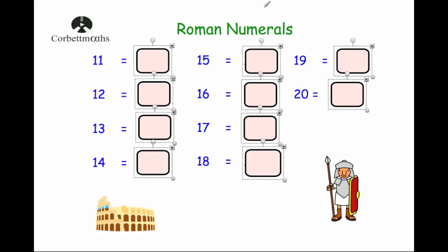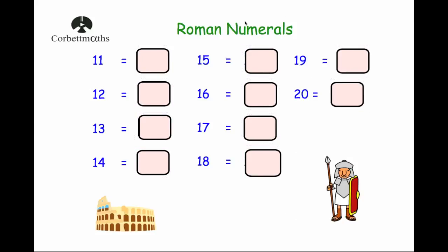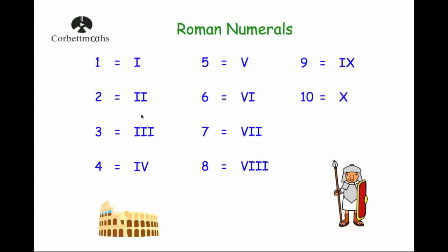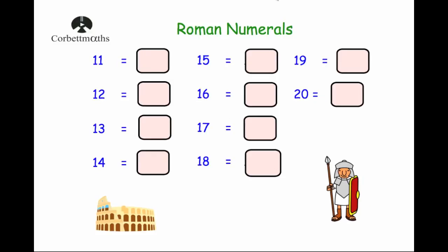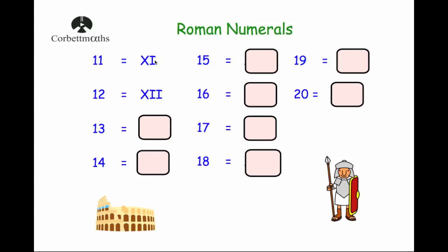Now we're going to look at the numbers from eleven to twenty. With the numbers from one to ten, if you put an X in front of each of them, you get the numbers from eleven to twenty. Eleven is a ten and a one, so X for ten and I for one — XI. Twelve is a ten and two ones — XII, where X is the ten and II is the two.